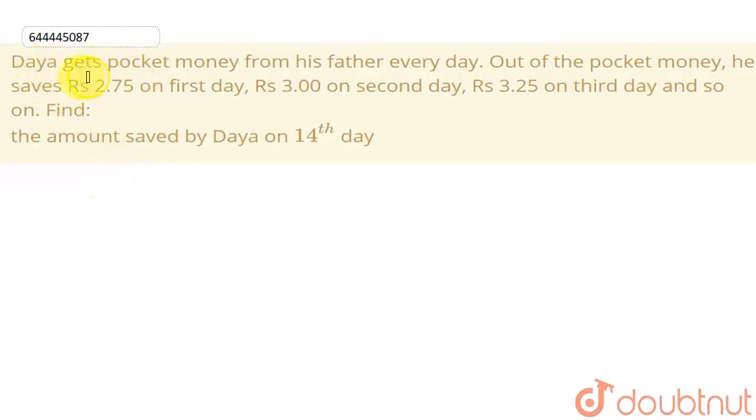So students, in this question we have given that Daya gets his pocket money from his father every day. Out of his pocket money, he saved 2.75 rupees on first day, 3 rupees on second day, and 3.25 on third day and so on. The amount saved by Daya on 14th day we have to calculate.